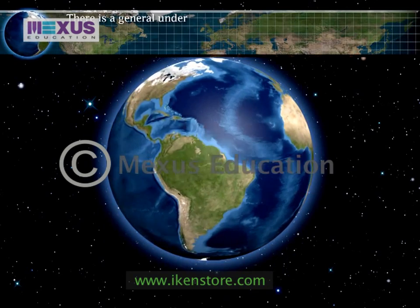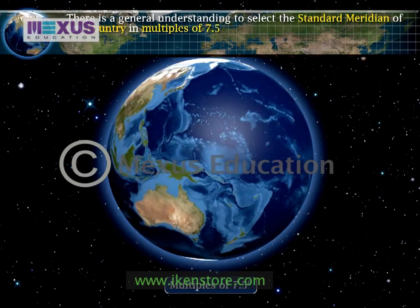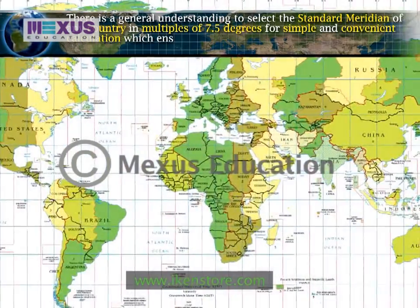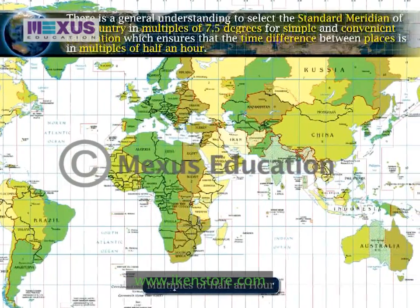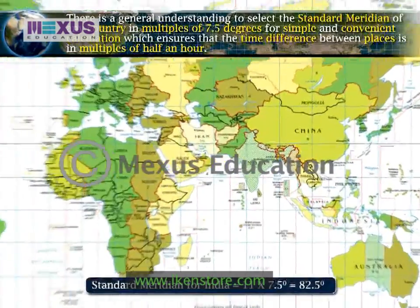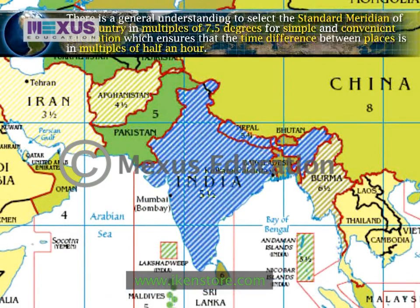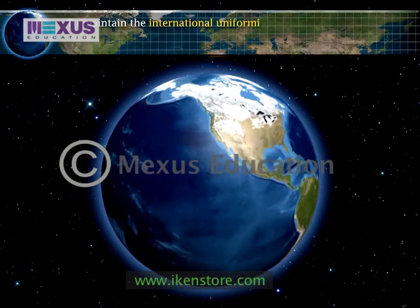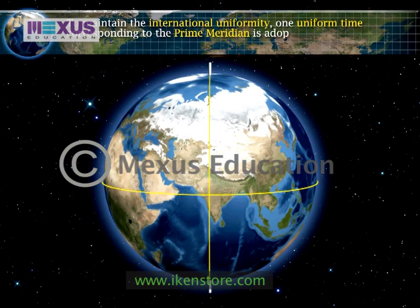There is a general understanding to select the standard meridian of any country in multiples of 7.5 degrees for simple and convenient calculation. This ensures that the time difference between places is in multiples of half an hour. For example, the standard meridian for India is 11 times 7.5 degrees. To maintain international uniformity, one uniform time corresponding to the Prime Meridian is adopted by all countries, which is known as the Greenwich Mean Time.